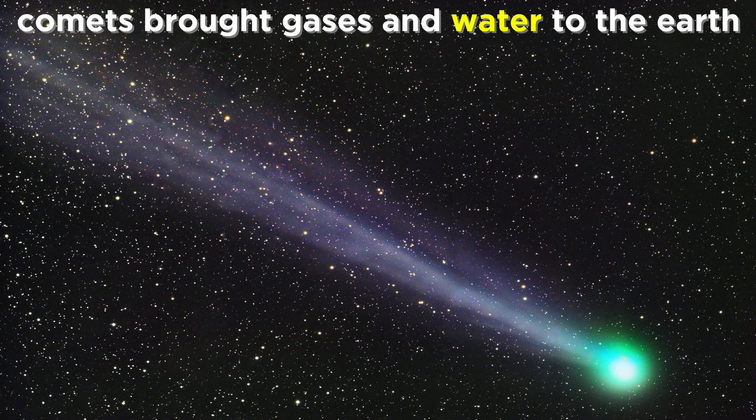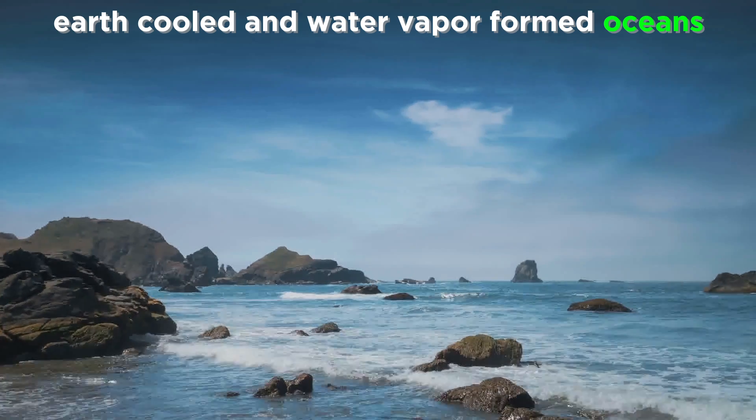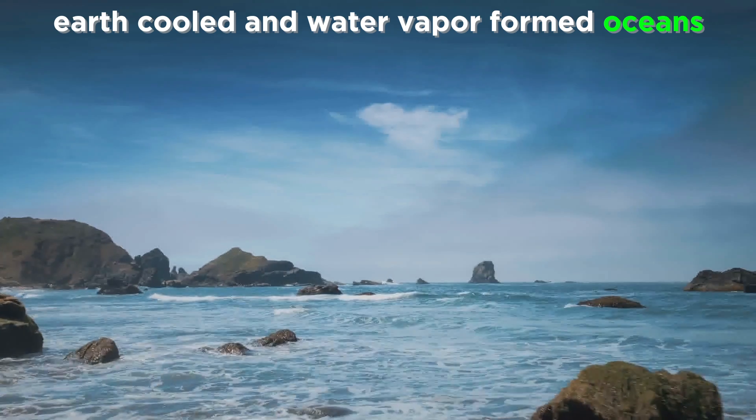Comets eventually delivered more of the atmosphere as well as lots of water during the late heavy bombardment we mentioned before, but we will talk about comets later in the series. After continued cooling, water vapor condensed to form all the oceans, and thus the primitive Earth was born.